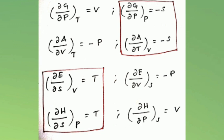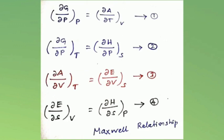So summarizing: (∂H/∂P) at constant S equals V; (∂A/∂V) at constant temperature equals −P; (∂U/∂V) at constant S equals −P. From these we can also write: (∂G/∂P) at constant temperature equals (∂H/∂P) at constant entropy. These are the derived partial derivative forms leading to the Maxwell relationships.